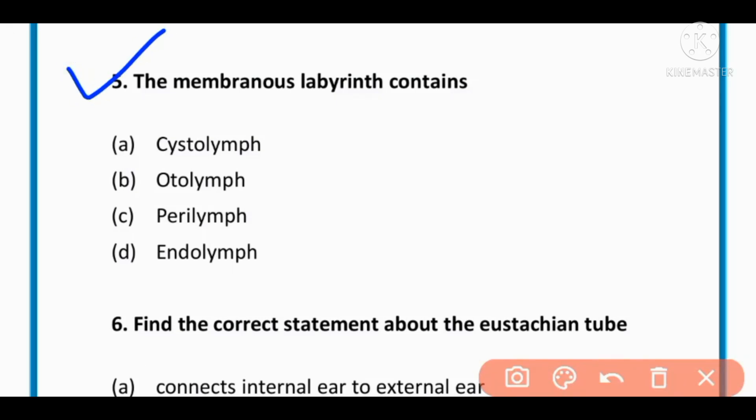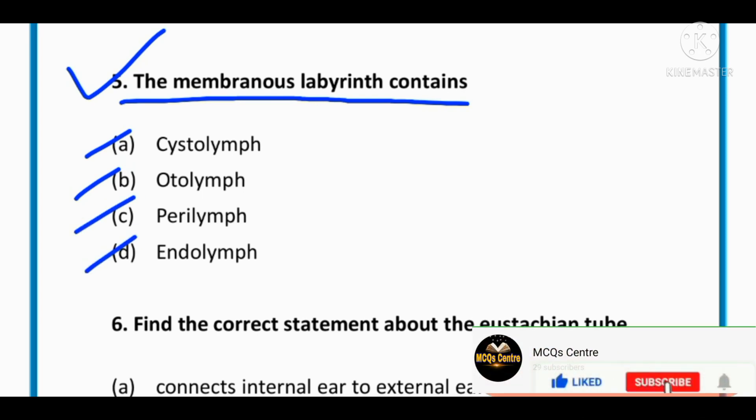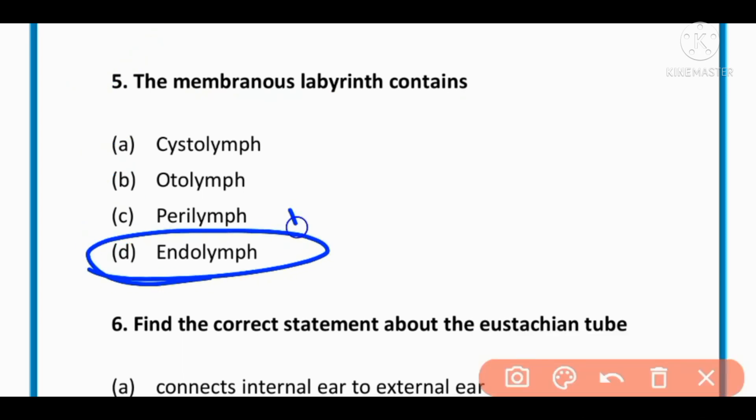MCQ number 5: The membranous labyrinth contains: cortolymph, otolymph, perilymph, or endolymph. The correct option is D: endolymph.